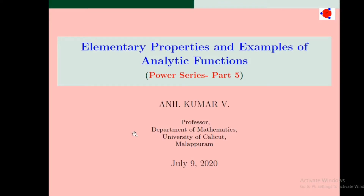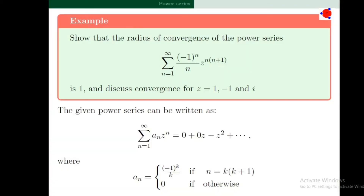Welcome to the sixth class on complex analysis. Today we discuss some problems in the section power series. Problem number one: show that the radius of convergence of the power series sigma n=1 to infinity of (-1)^n / (n(n+1)) * z^(n(n+1)) is 1.